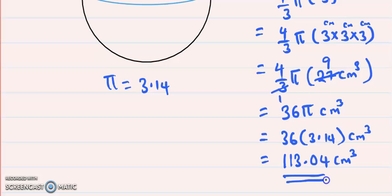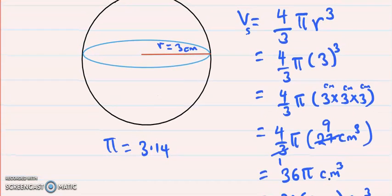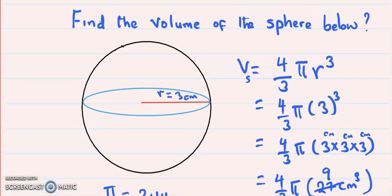That is the answer to this problem. To summarize, in order to find the volume of a sphere, you have to use this formula: 4/3 π r³. The rest is just plugging in the radius into the formula.